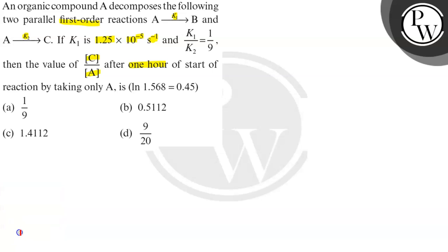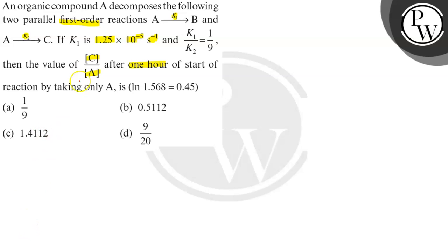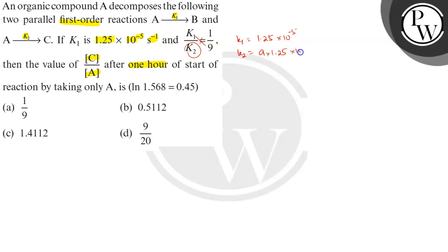The values given are: k1 = 1.25×10⁻⁵ s⁻¹, and k2 = 9k1. Cross-multiplying gives k2 = 9 × 1.25×10⁻⁵ s⁻¹. Both rate constants are in units of second inverse.